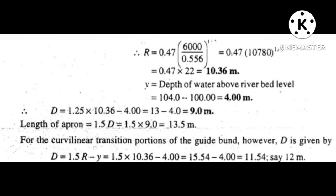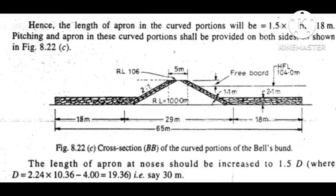For the curved transition portion of the guideband, D is given by 1.5R minus Y, equal to 11.54 meters. Hence the length of apron in the curved portion will be equal to 1.5 D. Pitching and apron in these curved portions will be provided on both sides as shown in the figure. The length of apron at the nose will be increased to 1.5 D, where D is equal to 2.24 into (10.36 minus 4), equal to 14.86 meters.